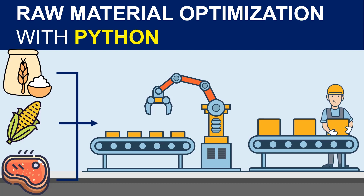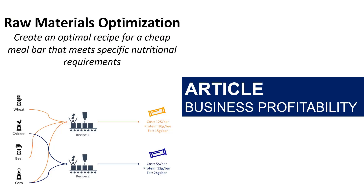Hi friends, welcome back to the channel. In this video, we will design an optimized recipe for a cheap meal bar using linear programming with Python. This video is following an article I published more than a year ago — I have added the link in the description. The concept was to use linear programming to find an optimal mix of raw ingredients to produce the cheapest meal bar while meeting some constraints of minimal nutrition requirements.